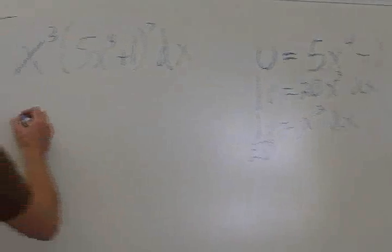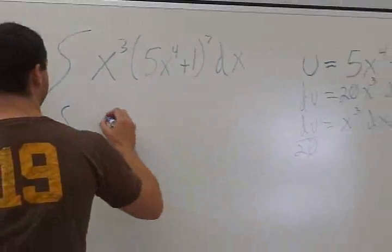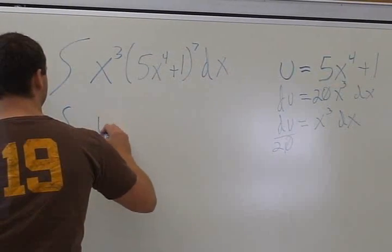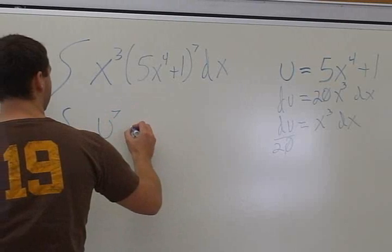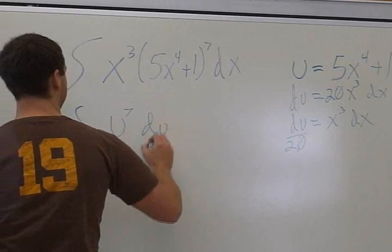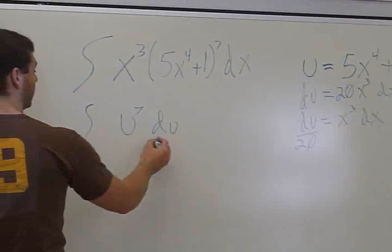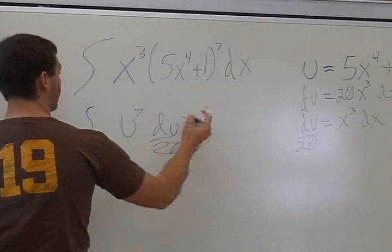Now we plug in for u, and that gives us u⁷ du. That looks a lot cleaner than this whole mess.